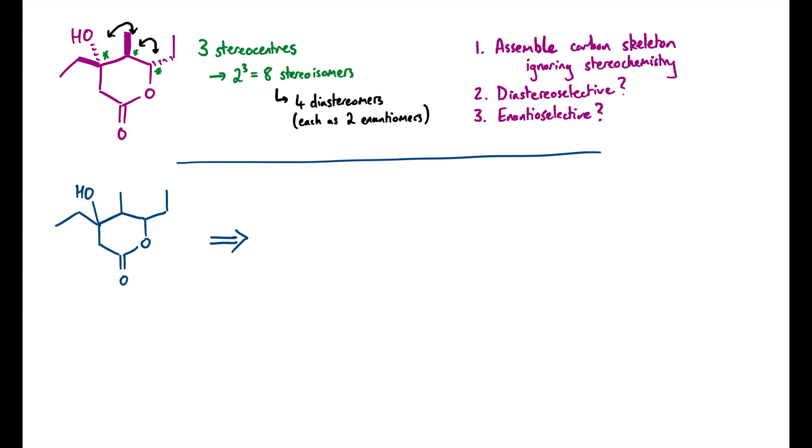Okay, so getting cracking, we can identify that this molecule has one key functional group, which is this ester. This molecule would often be called a lactone, and that's just a word for a cyclic ester like this. As always, esters can be disconnected like this.